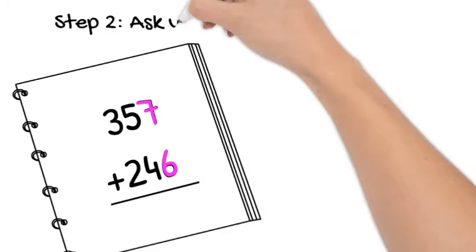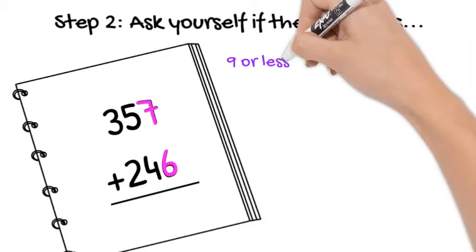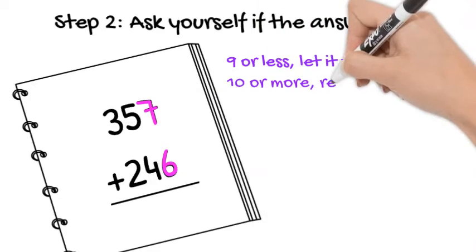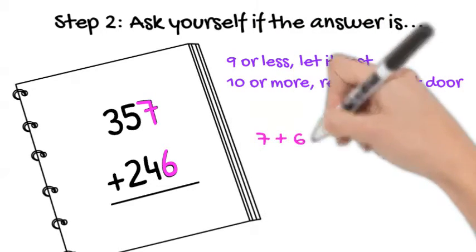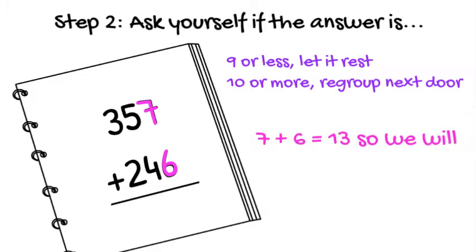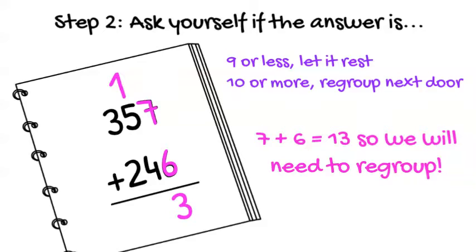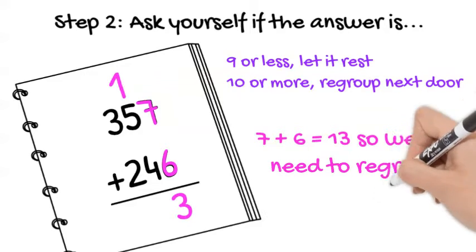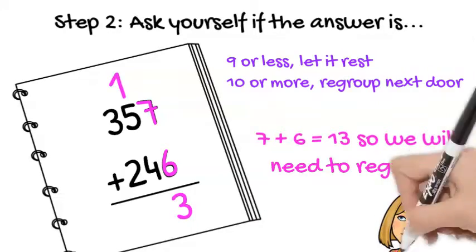Step two, ask yourself if the answer is nine or less, let it rest, or ten or more, regroup next door. Our problem is seven plus six. I know seven plus six is thirteen. So thirteen has one ten and three ones. That means we put the three in the ones place and we regroup that one ten next door. It looks like a ten, it looks like a one on top.